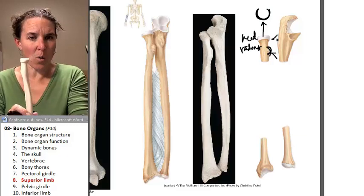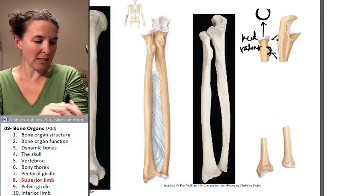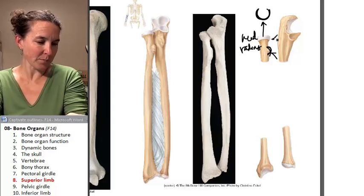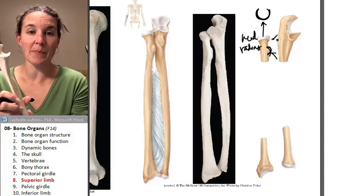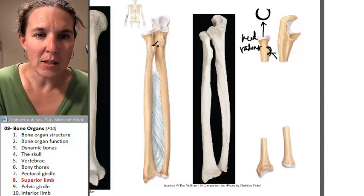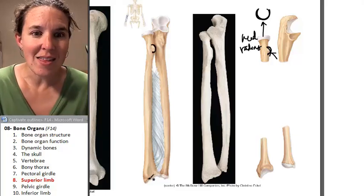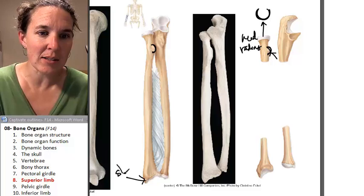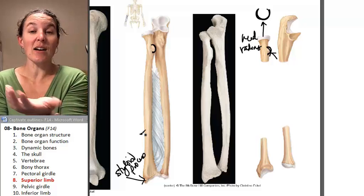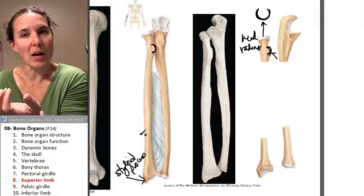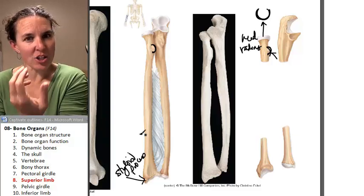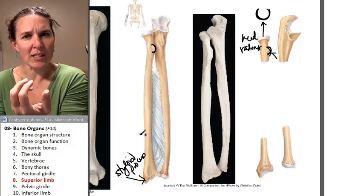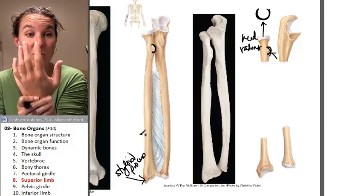In anatomical position, the radius is on the thumb side of the body. The ulna is medial — the ulna is on the pinky side of the body. The radius also has a radial tuberosity and a styloid process at the distal end. You can actually feel it — it's a little bump that marks where the wrist bones articulate.